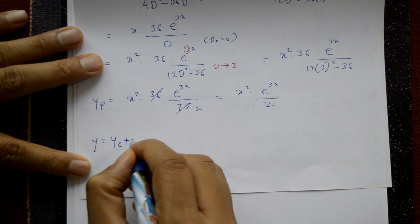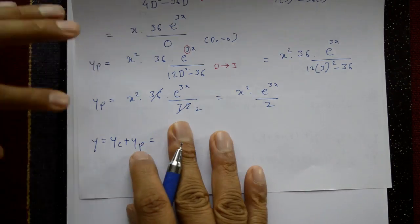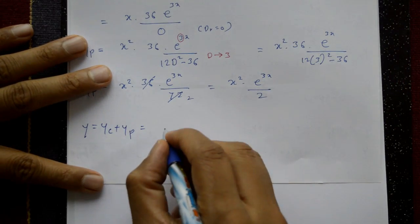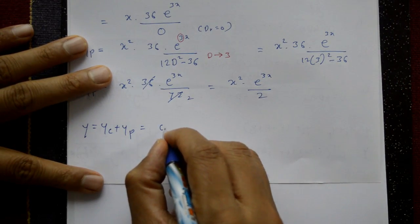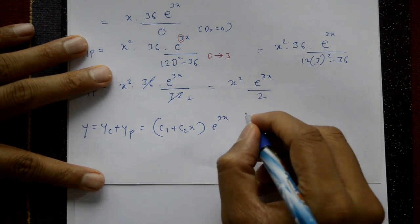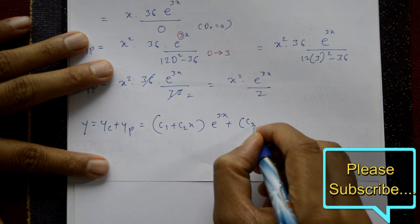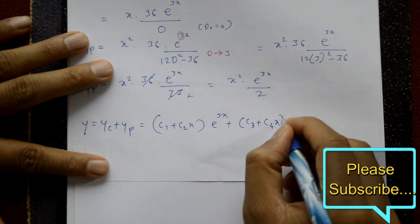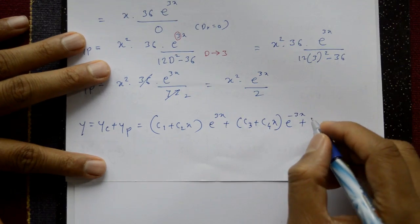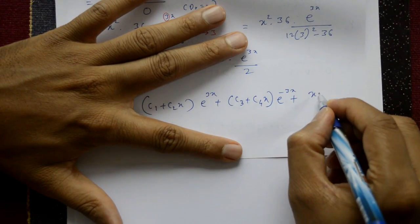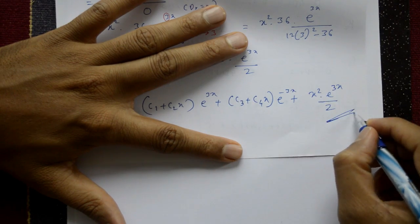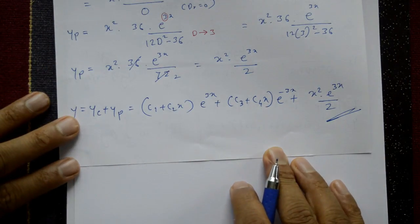The complete solution is y = yc + yp. Therefore the complete solution is: y = (c1 + c2·x)e^(3x) + (c3 + c4·x)e^(-3x) + x²e^(3x)/2.